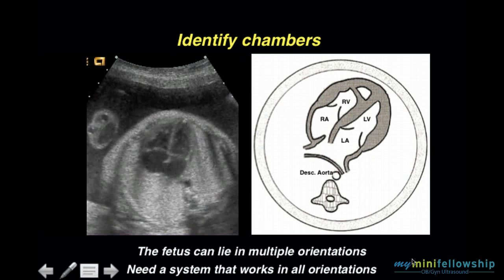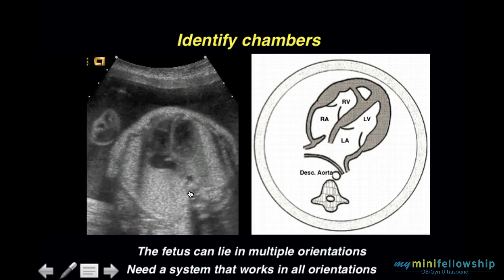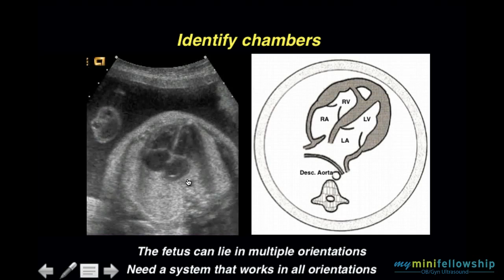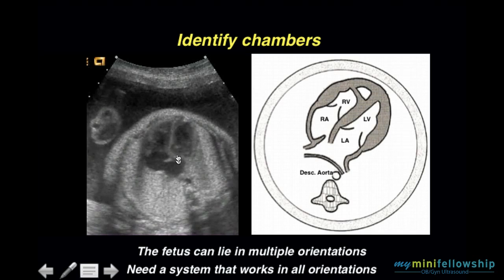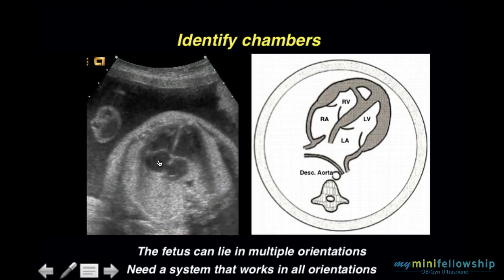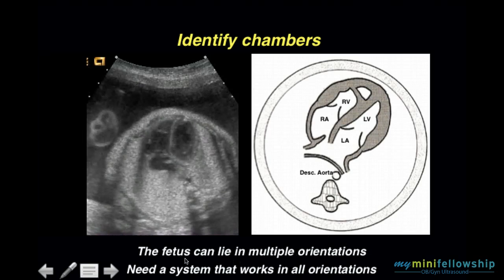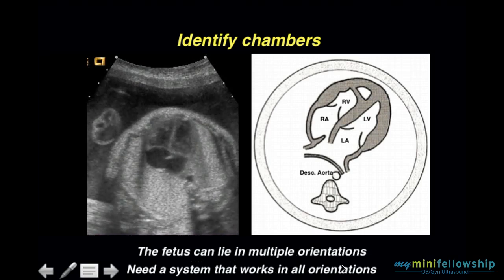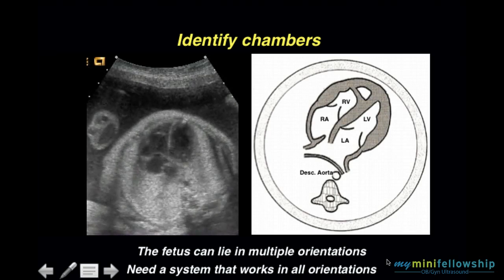Here we have a fetus in a different orientation: spine, descending aorta, left atrium, left ventricle, right ventricle, right atrium. The system works in all orientations.